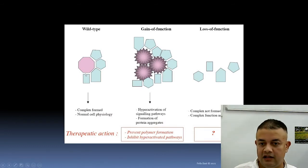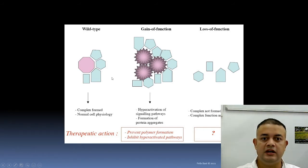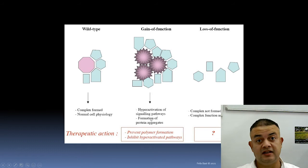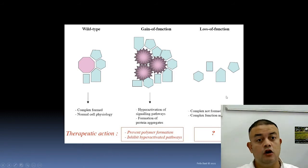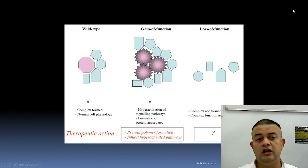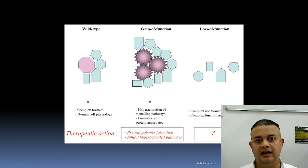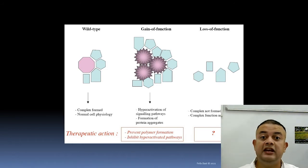The wild type protein forms a normal ligand complex supporting normal cell physiology. With gain of function, you see hyperactivation of signaling pathways and formation of protein aggregates. With loss of function, that complex is not even formed — its function cannot be performed. Loss of function is typically removed by purifying selection while gain of function leads to Darwinian selection.